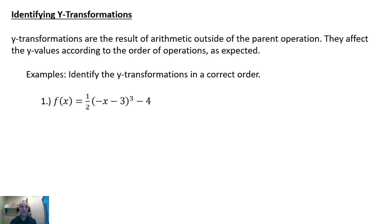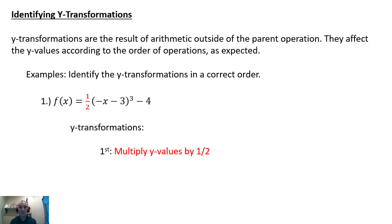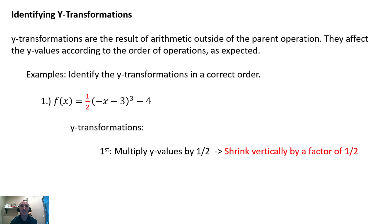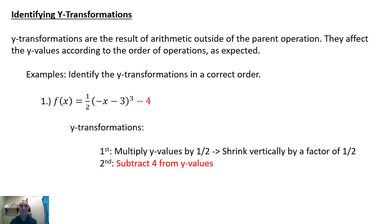Number one: find the Y-transformations of f(x) = ½ · (-x - 3)³ - 4. Looking at the arithmetic happening to the cube — the parent function — we have multiplication by ½ and minus 4. Following order of operations, we do the multiplication first: multiply the Y values by ½, giving a vertical shrink by a factor of ½. The second Y-transformation is subtracting 4 from the Y values, which shifts the graph down 4 units.